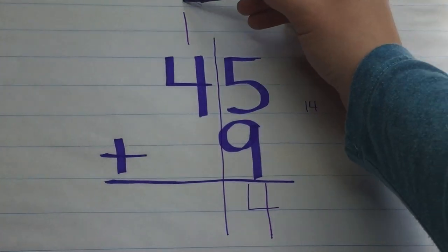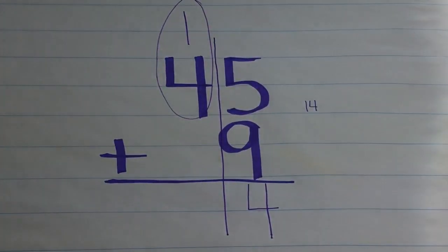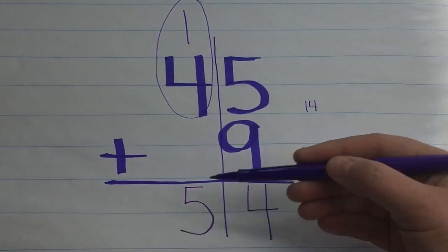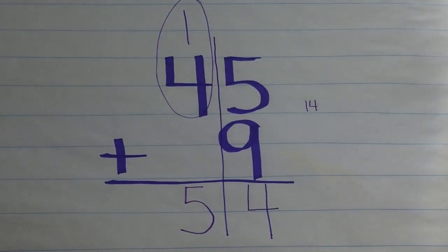Then you're going to add the tens. 1 plus 4 equals 5. Our answer for 45 plus 9 equals 54.